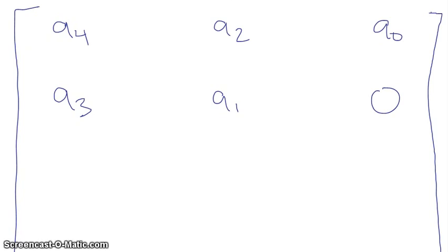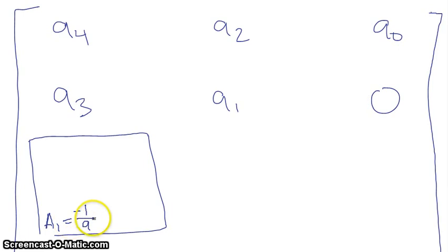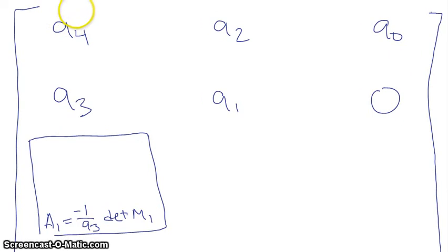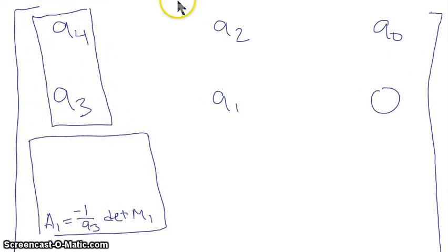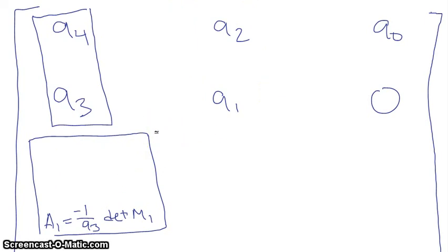The next three rows are as follows. In this box here, we want to put A1, which is equal to minus 1 over little a3 times the determinant of M1. So we're taking minus 1 over this element, and the determinant of this matrix — the first column is these two elements, and the next column is these two elements here. So in this spot we want to put minus 1 over a3 times the determinant, so a4 times a1 minus a2 times a3.